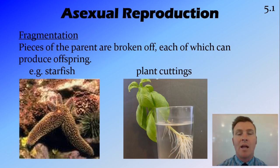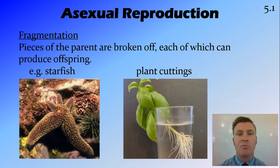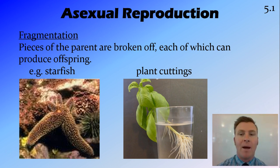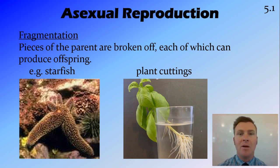Fragmentation is when a part of the parent is broken off, resulting in a smaller chunk of that parent, which can then grow into another organism and produce offspring. This would be like somebody cutting off your arm and a whole new body growing from that arm, plus you growing your arm back.